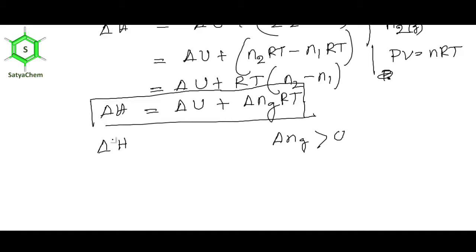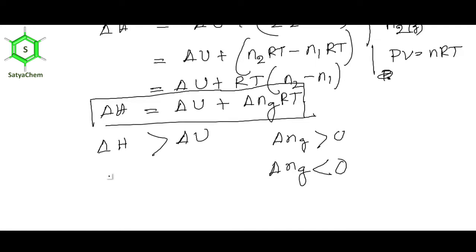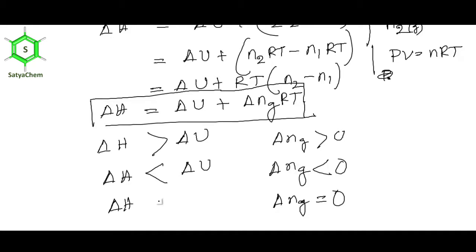Now a question: when delta(nG) > 0, will delta H be greater or less than delta U? Since delta H = delta U + delta(nG)·RT: when delta(nG) > 0, delta H > delta U; when delta(nG) < 0, delta H < delta U; and when delta(nG) = 0, delta H = delta U.